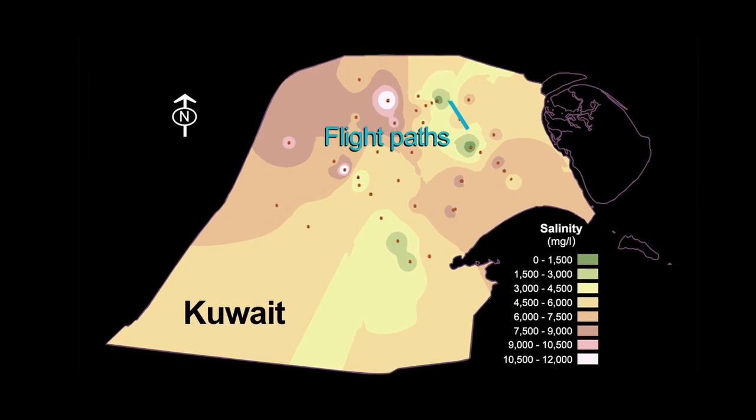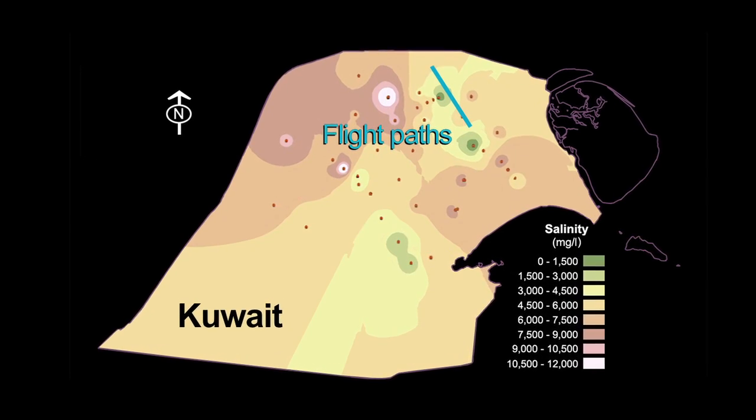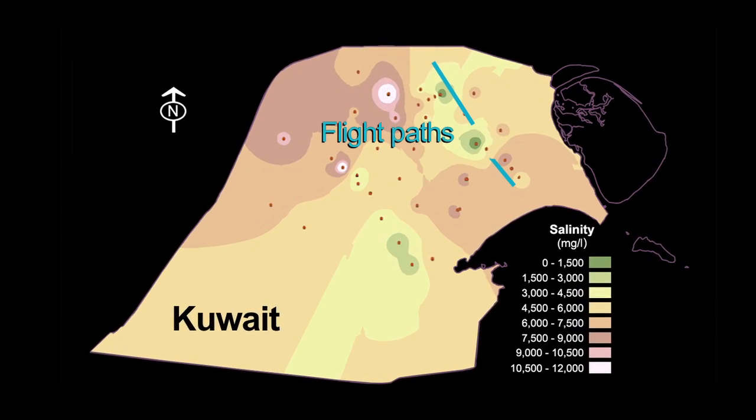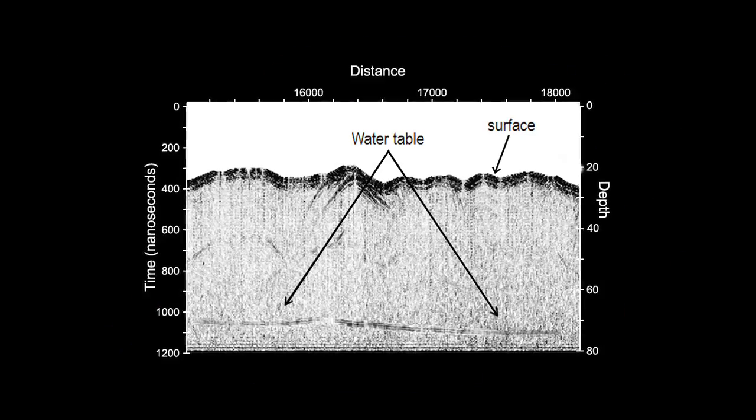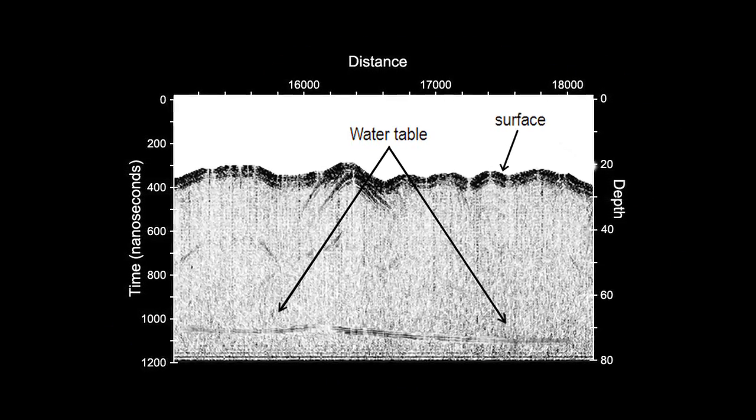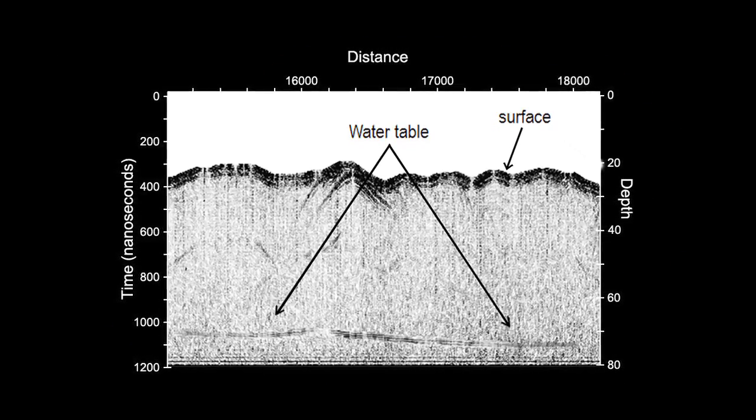We were able to prove that yes, we can use that radar technology we used on Mars to map water on earth on a large scale.